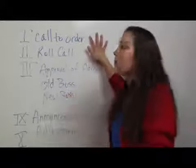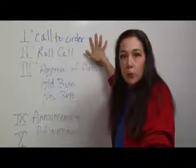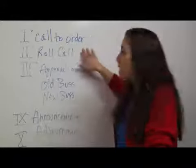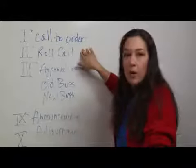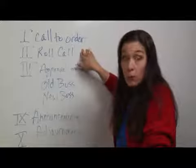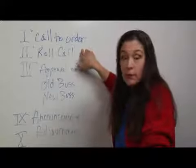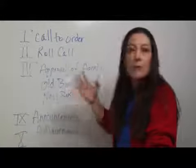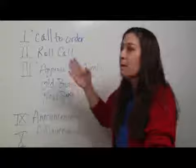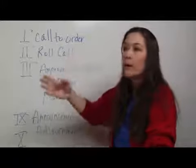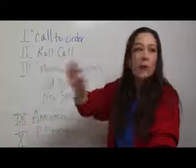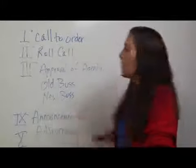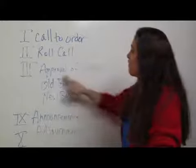The first thing is always the call to order. The second thing is always the roll call. So we're going to call this meeting to order, and we're going to make sure that Jim and Sally and Tim and Bob and Ricky and Greg and David are all in the meeting, and they're all here. Great, we can move on.